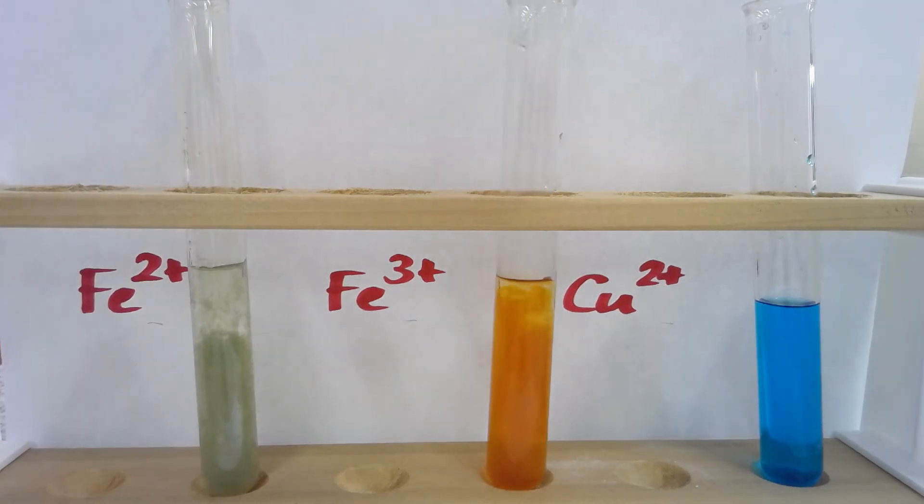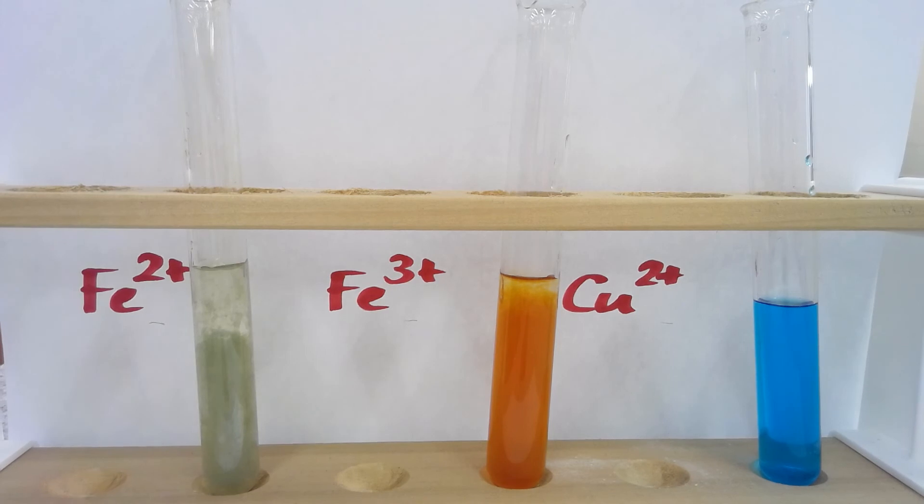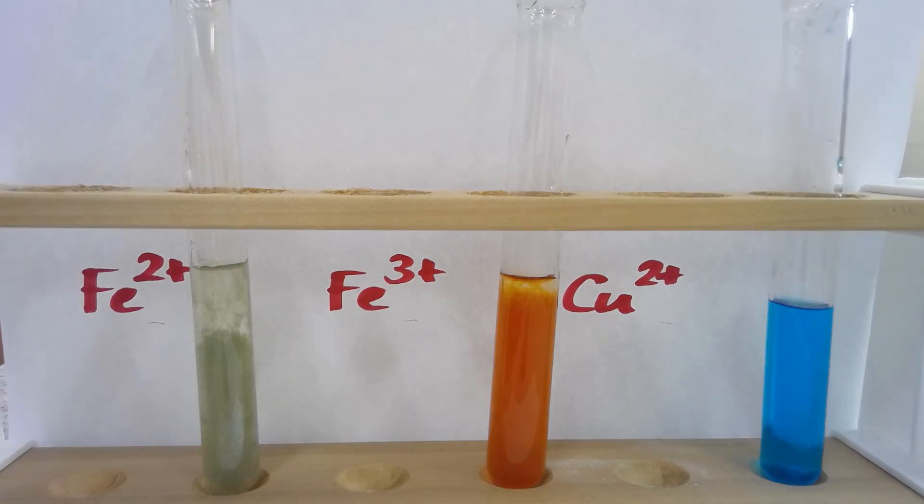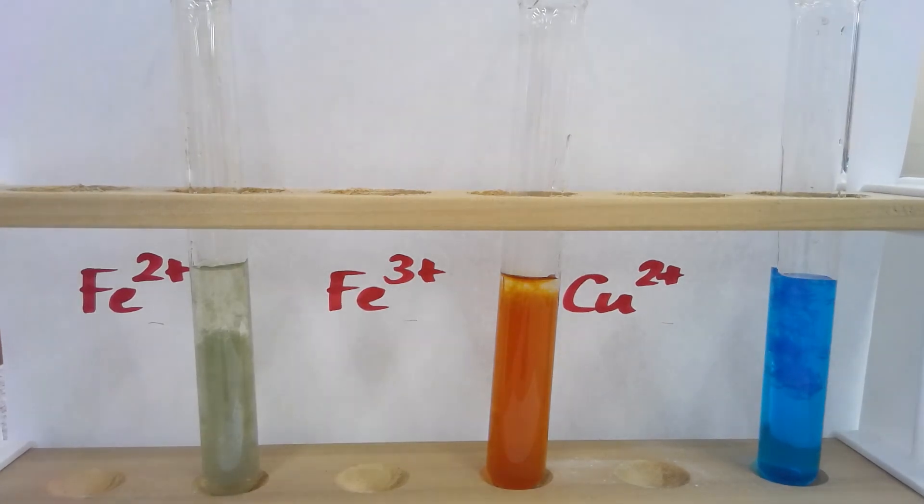With our Fe3+, we've just made an orangey-brown or rusty colored precipitate, and with our copper 2+ we make a blue colored precipitate.